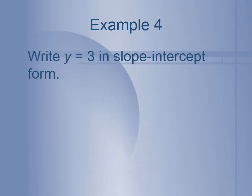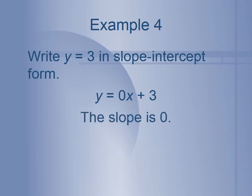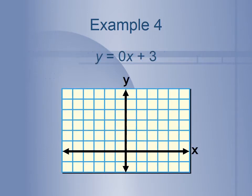Next example: write y equals 3 in slope-intercept form. We already solved for y, but where is our m? If there's no x value, that means x is being multiplied by 0. So y equals 0x plus 3 is our slope-intercept form, which means the slope is 0 and the y-intercept is 3. On the graph, we first plot the y-intercept (0, 3). But since the slope is 0 — meaning no rise and no run — we get a horizontal line at y equals 3.